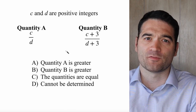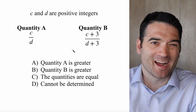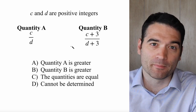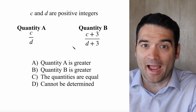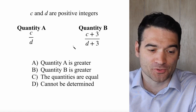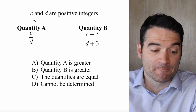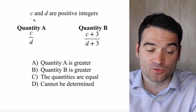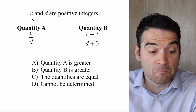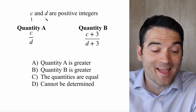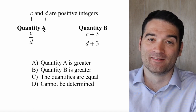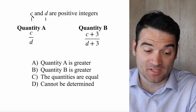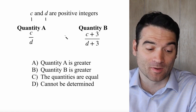On quantitative comparison questions involving algebra, I like to just pick a number or numbers and see what happens as a first step. So let's say that C and D — they need to be positive integers — are 1 and 1. Nothing said that they had to be different. Why don't I just make C equal to 1 and D equal to 1?